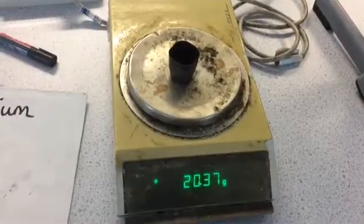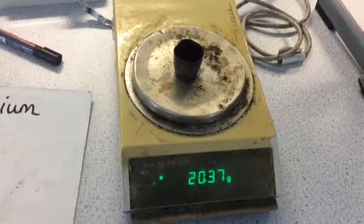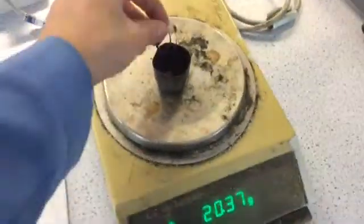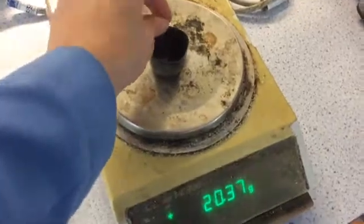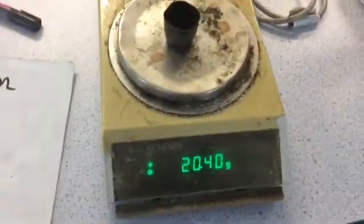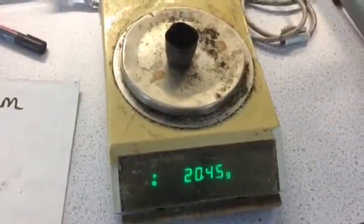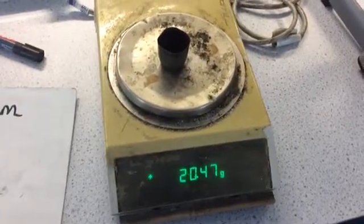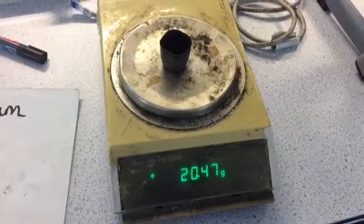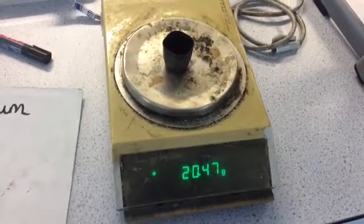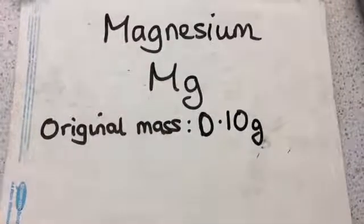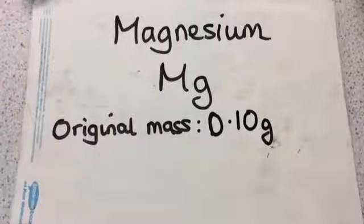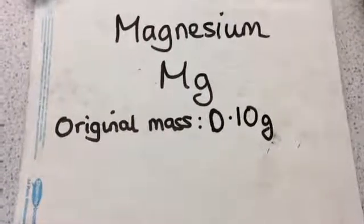So I've put a crucible onto the balance and it has a mass of 20.37 grams. I'm going to now put my magnesium which I've just rolled up loosely in and I can see that my mass is going up and it's settled at 20.47 grams.